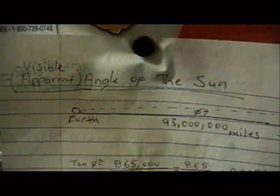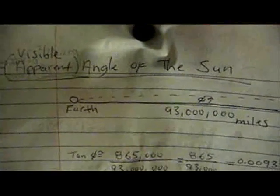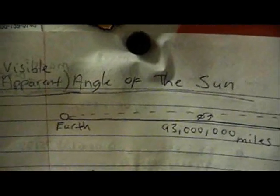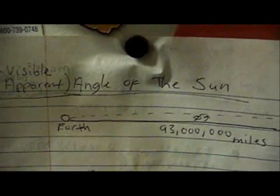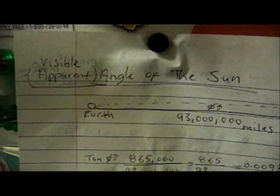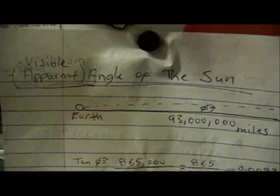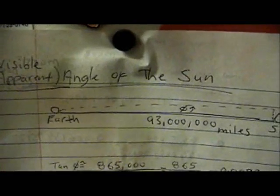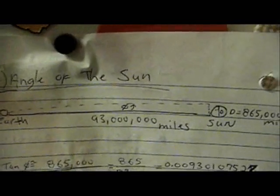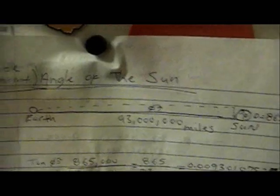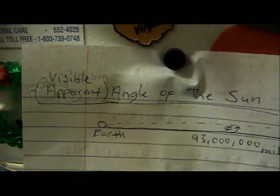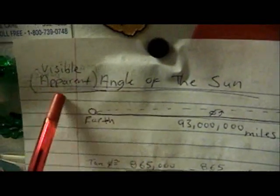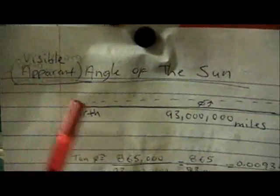This video is about how big the sun appears to be, in terms of degrees — the apparent visible angle.